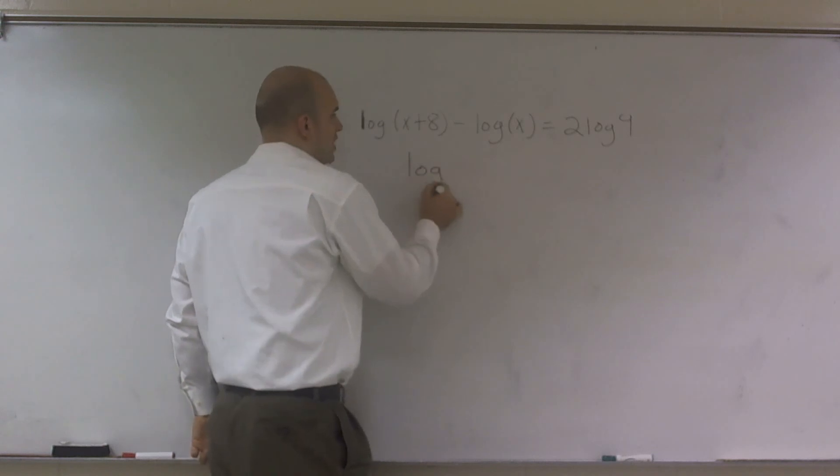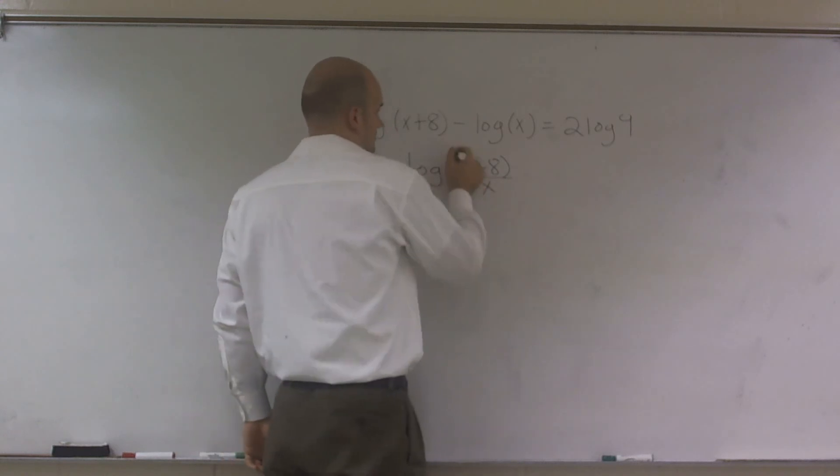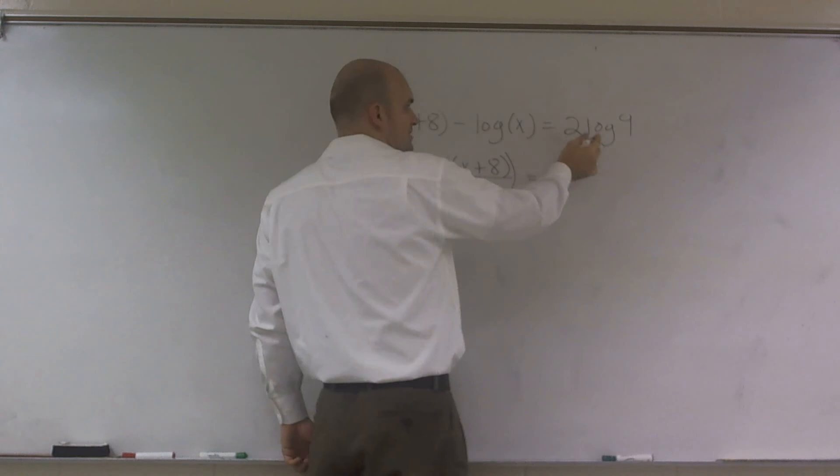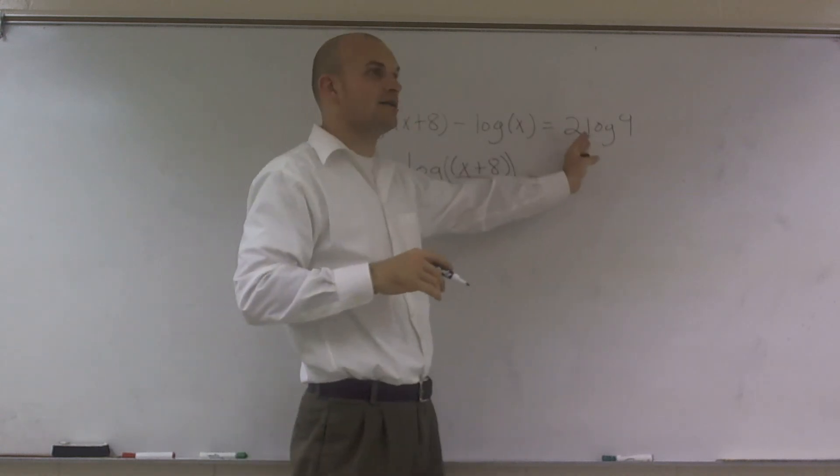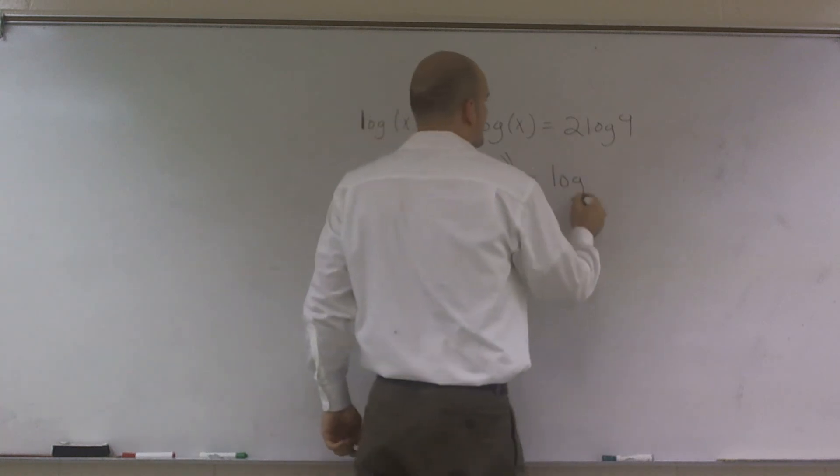So this can be reduced down to log of (x+8) divided by x equals 2 log of 9, but also remember, whenever you have a number in front, you can rewrite that as your exponent. So I have log of 9 squared.